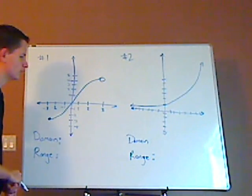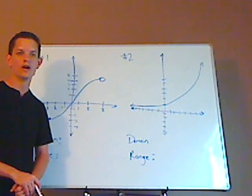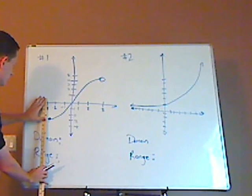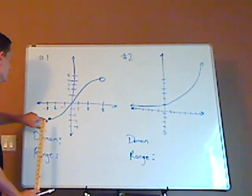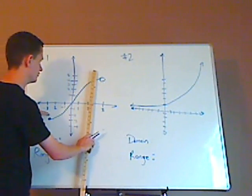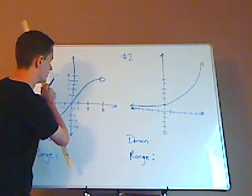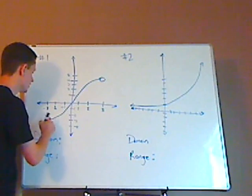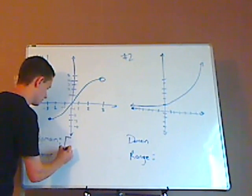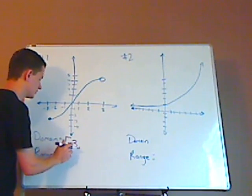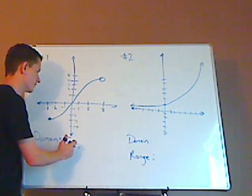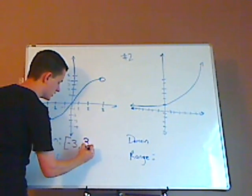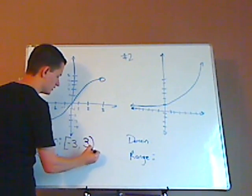For the first problem, remember, domain is all possible x-values, where the range is all possible y-values. Look at first your domain. It starts at negative 3, and since it's a closed circle, that means it's included. Then it goes all the way to 3 and stops at positive 3, and it's an open circle, which means it's not included. So in interval notation, you're starting at negative 3 — negative 3 is included — and it goes all the way to positive 3. Since it's an open circle, it's not included, which means it's a parenthesis.